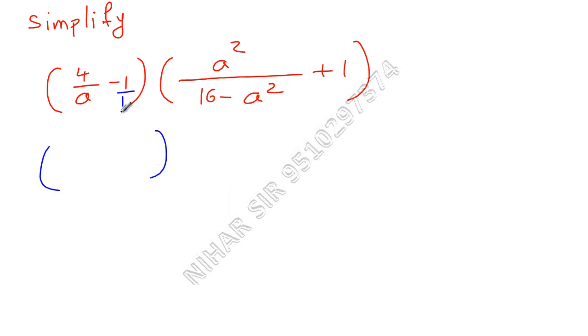will be a. Here let us say I have 1, so LCM of 1 and a is a. A multiply by what gives you a? That is 1, so 4 remains the same. Here 1 multiply by what gives you a? That is a, so 4 minus a upon LCM a.